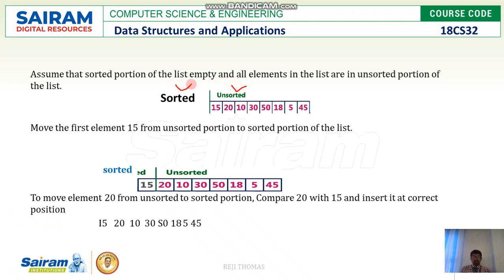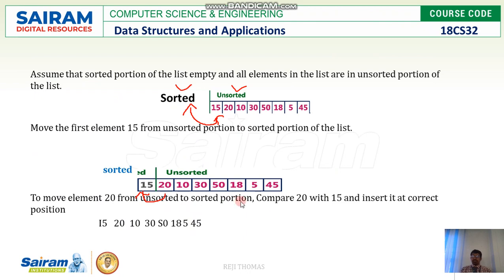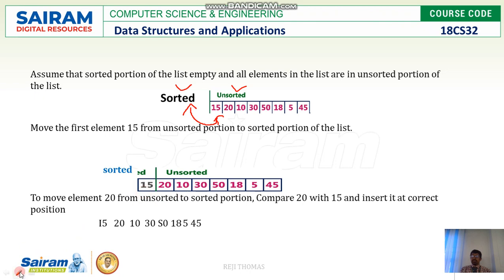Looking at this diagram: during the first cycle, before any processing, the sorted part does not have any element — it is empty. We have to start with the first element: take it out from the unsorted part and place it in the sorted array. Since it's the first element, there is no difficulty. Then we have to continue and find the next element in the unsorted array.